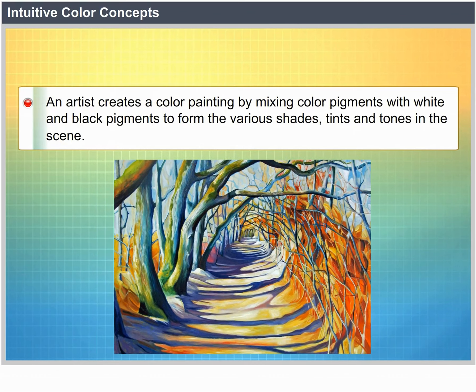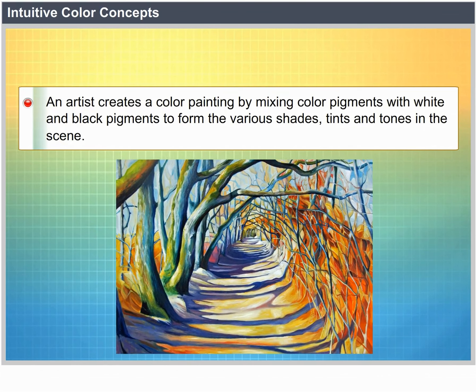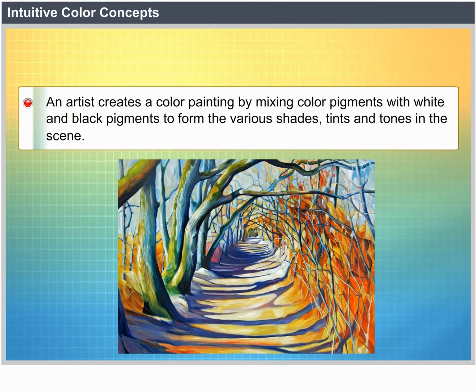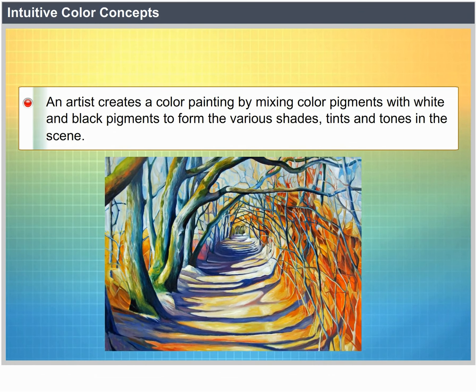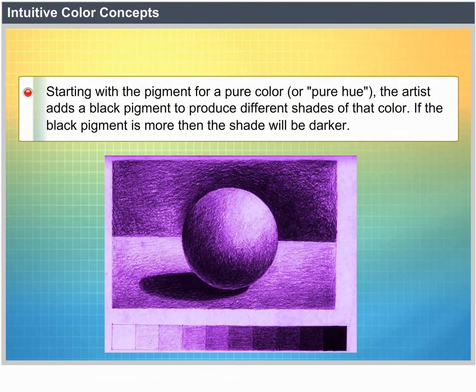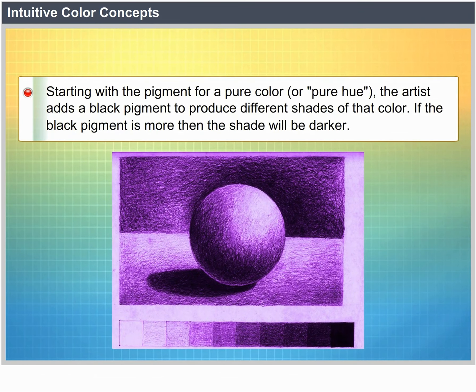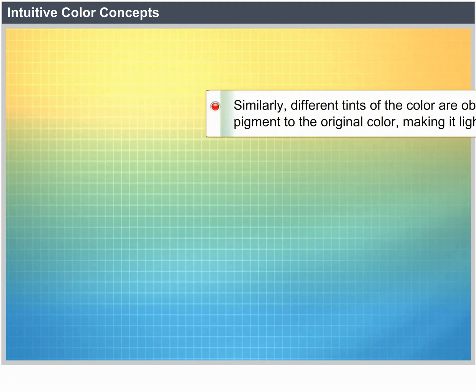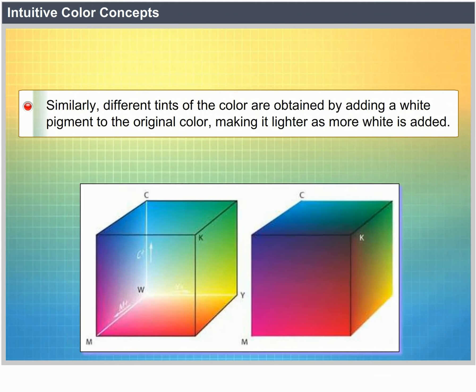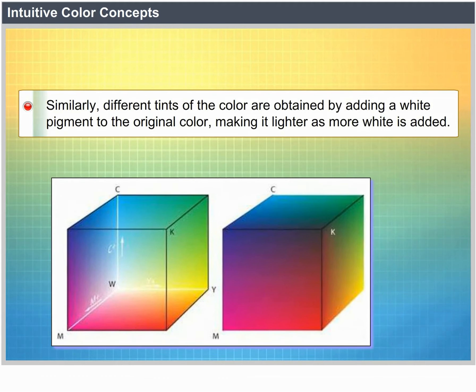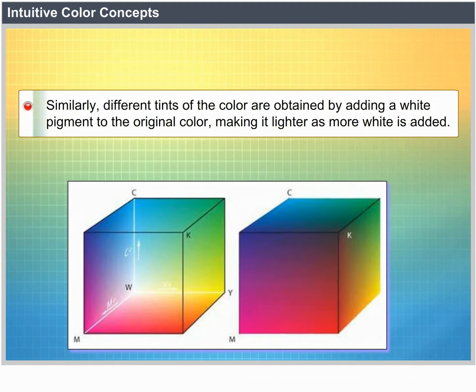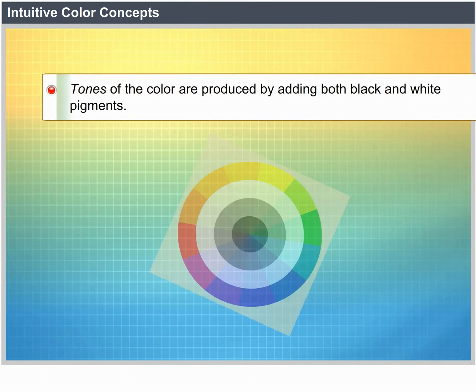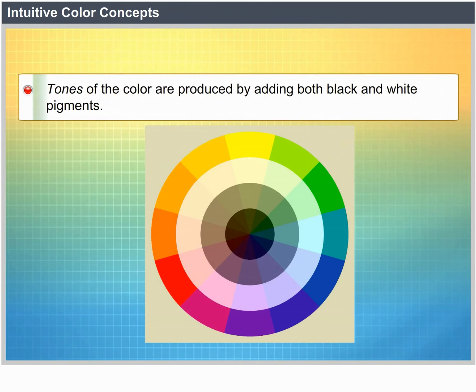Intuitive color concepts. An artist creates a color painting by mixing color pigments with white and black pigments to form various shades, tints, and tones. Starting with a pure color or pure hue, the artist adds black pigment to produce different shades — the more black, the darker the shade. Different tints are obtained by adding white pigment to the original color, making it lighter as more white is added. Tones of the color are produced by adding both black and white pigments.